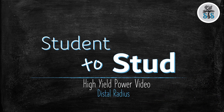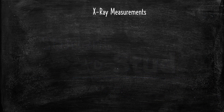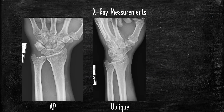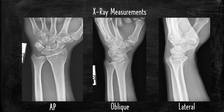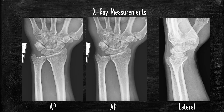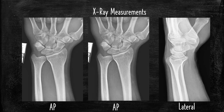Welcome back to Student to Stud. We're going to do a quick and dirty video on the distal radius — x-ray measurements, going over the AP, oblique, and lateral views. We're going to primarily focus on the AP and lateral because this is what we're going to use to make our radiographic measurements.